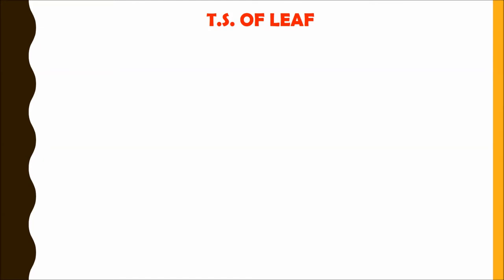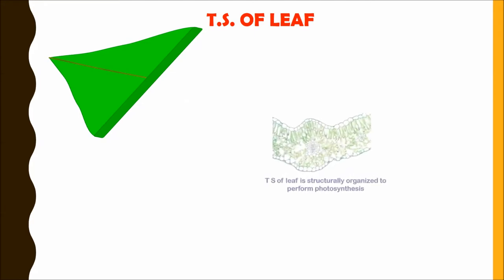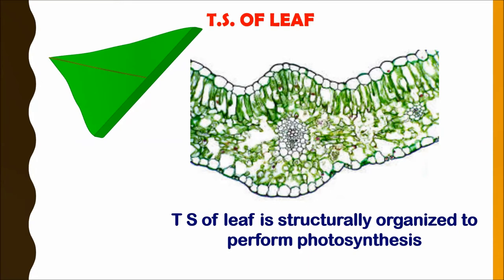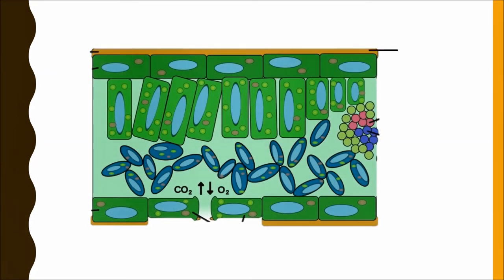TS of leaf. If we observe the TS of leaf under microscope, we can see that the leaf is structurally organized to perform photosynthesis. The TS of leaf constitutes of superficial membrane called cuticle, upper epidermis and lower epidermis.